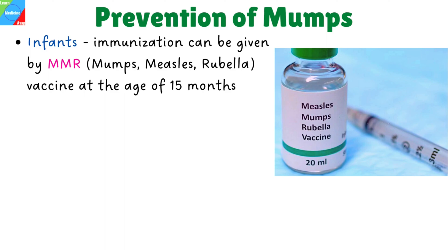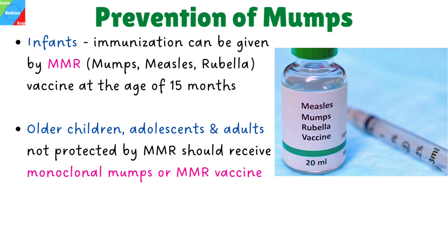After that, immunization can be given by MMR — that is, mumps, measles, rubella vaccine — at the age of 15 months. Older children, adolescents, and adults who are not protected by MMR and have not had mumps, and are in contact with children, should receive monovalent mumps or MMR vaccine. Mumps immunoglobulin is of no value as prophylaxis or for established disease.